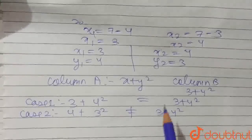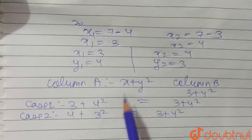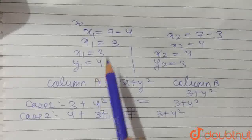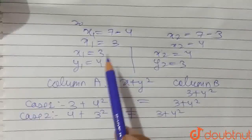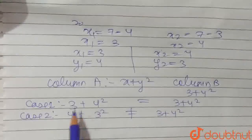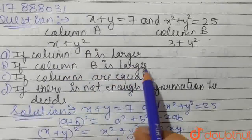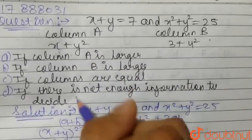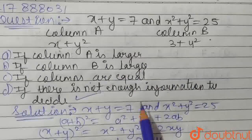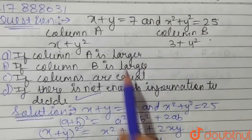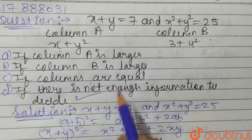So in Case 1 both columns are equal, but in Case 2 both columns are unequal. It is not possible to determine a single definitive relationship — the columns cannot consistently be equal or unequal based on these two cases. Therefore, option D — there is not enough information to decide — is the right answer. We need more information to decide which option is correct.